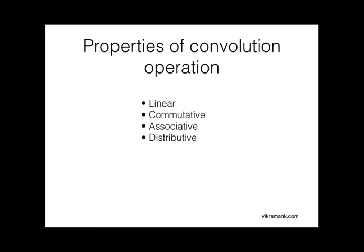I hope you have a better understanding of how convolutional operation works. So, now let's move on and look into the properties of a convolutional operation. The convolutional operation is linear, commutative, associative and distributive. Let's see what it means.